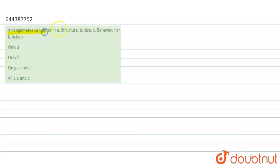Anisogametes can differ in structure, size, behavior, or function. So anisogametes which are involved in the sexual reproduction of algae, these are the gametes.